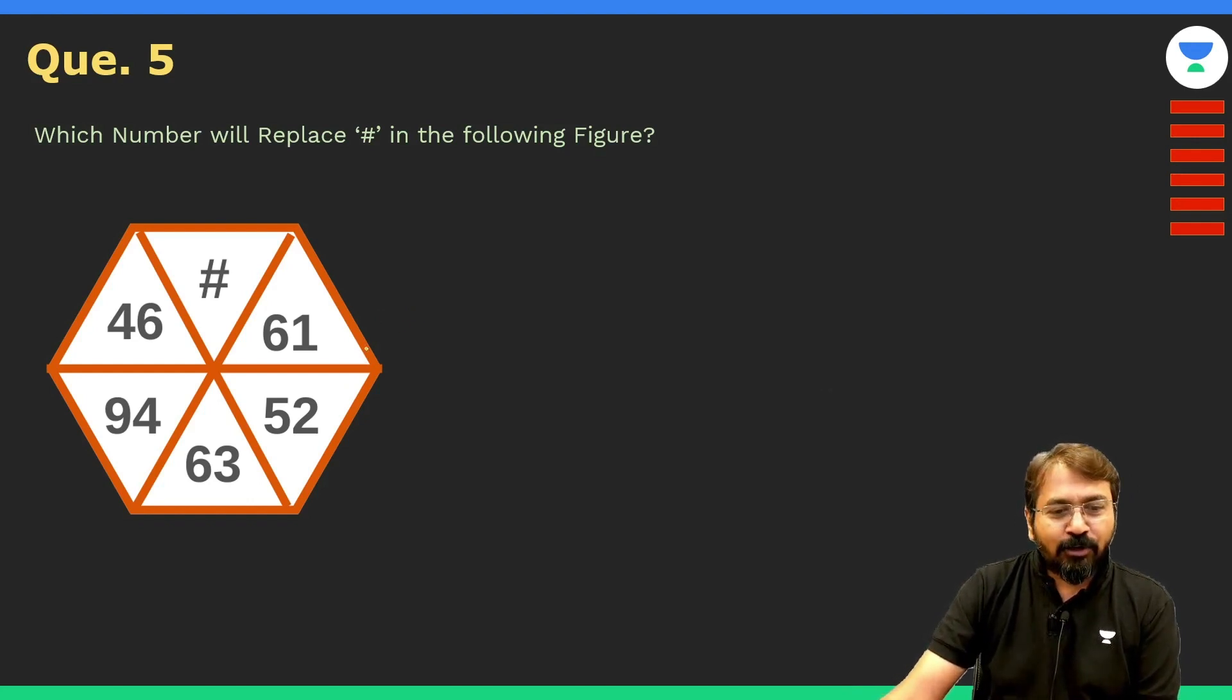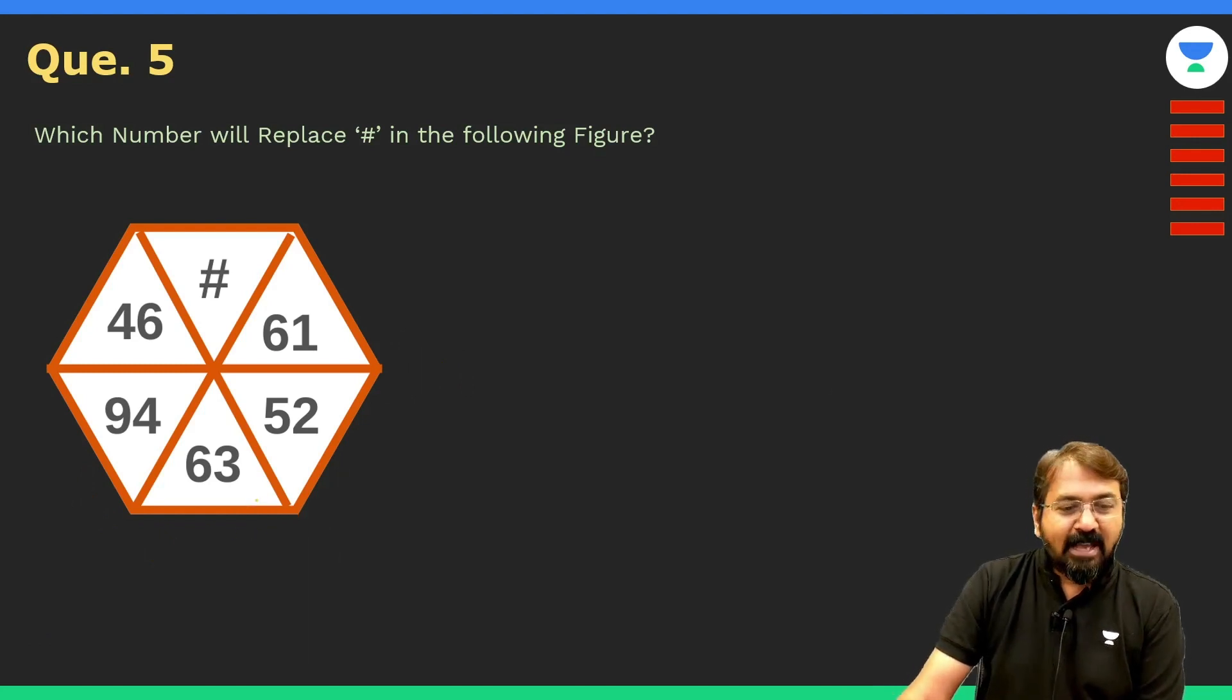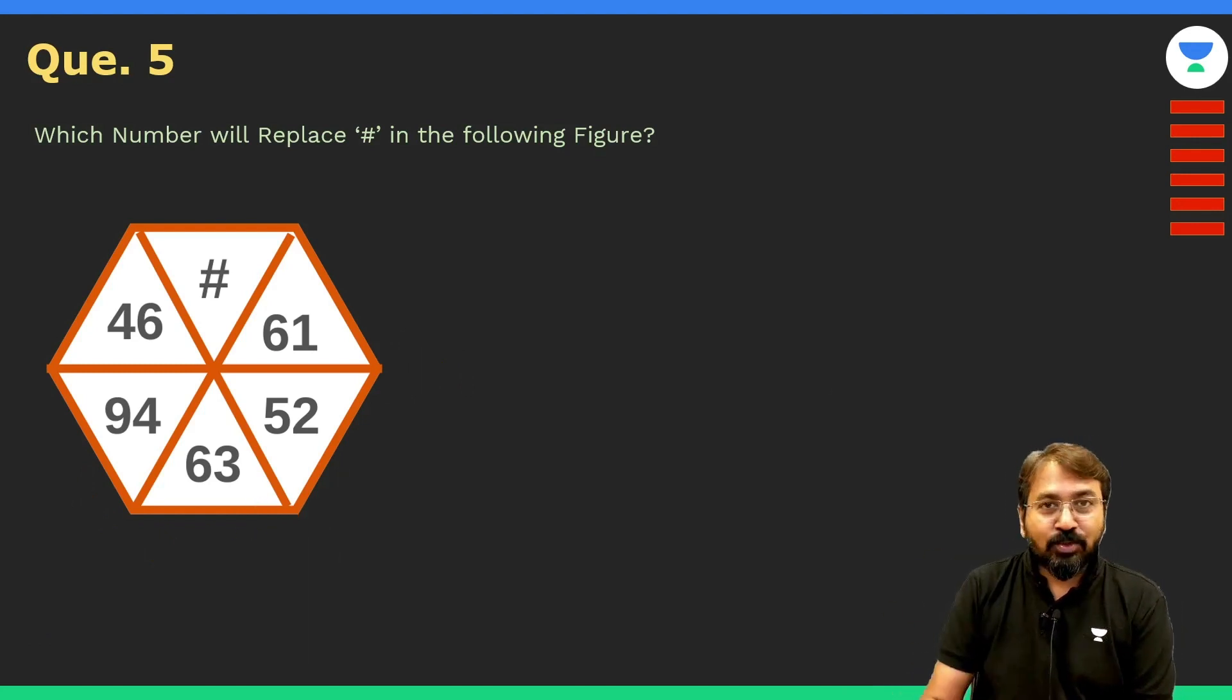Let's understand. I'm sure all of you must have thought that this difference is 11, then this difference is again 11, but this difference is completely different, it's 31. So is that some pattern? No, that's not the pattern.